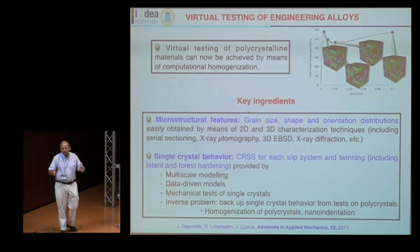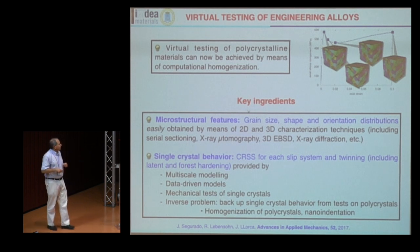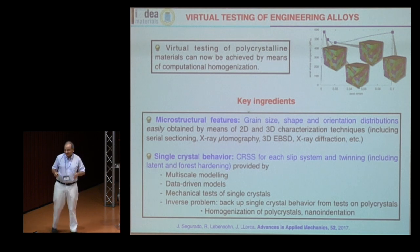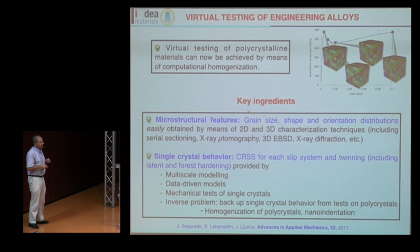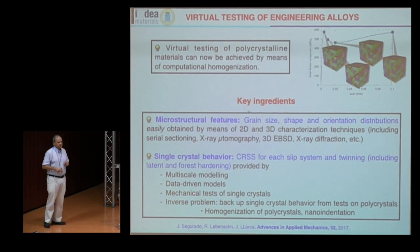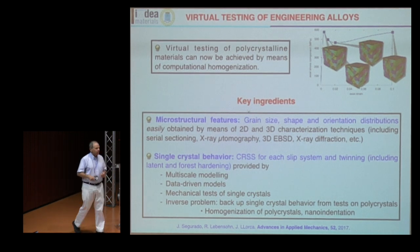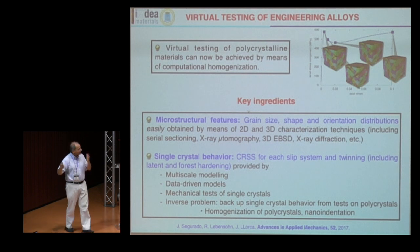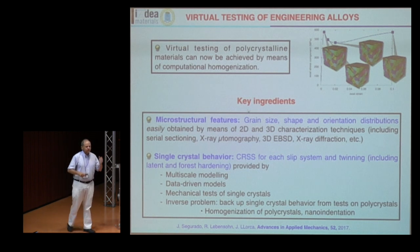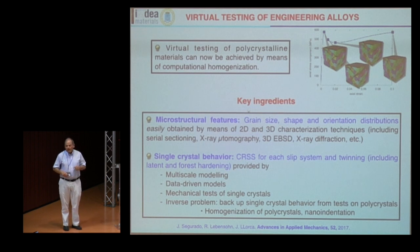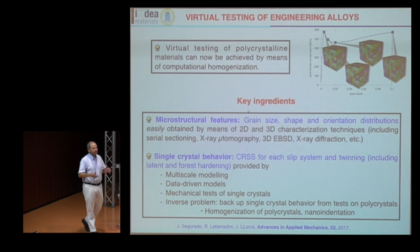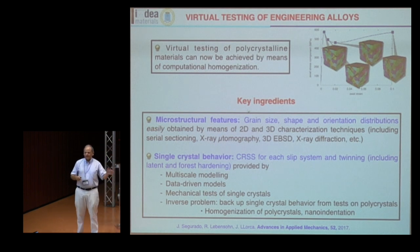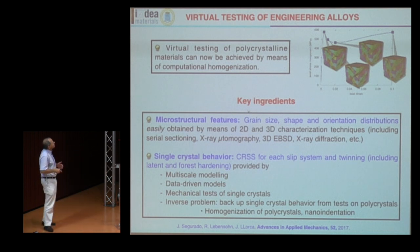This information may come from four ways: multiscale modeling (what I'm trying to do — it will take some time), data-driven models (which may be available in a couple of years), mechanical tests of single crystals within polycrystals, or solving the inverse problem — fitting single crystal behavior from tests on polycrystals, either from homogenization or nanoindentation results. The last two strategies are the only ones currently available when you want to predict the mechanical behavior of very complex engineering alloys used in aerospace and automotive applications.